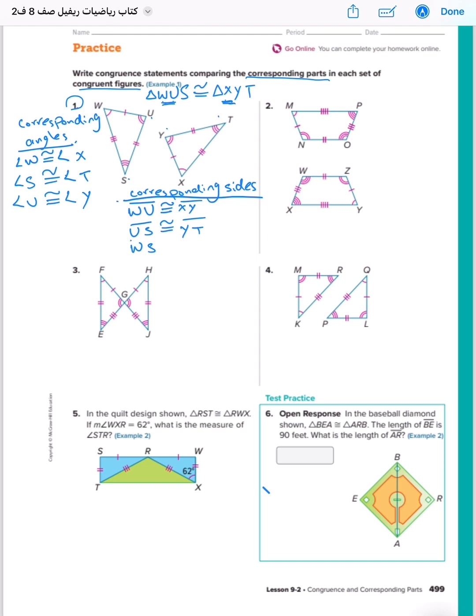Last one, WS, it's congruent to - W and S, you must say X and T. XT. If you want to write SW, you must write SW with TX. You can write this one, you can write that. If you change the order, you must change also the angle.